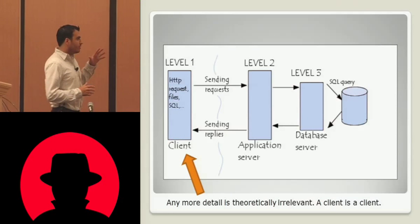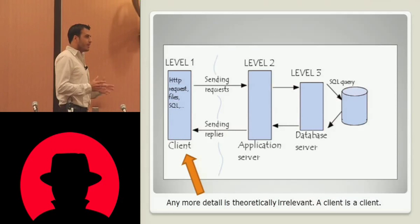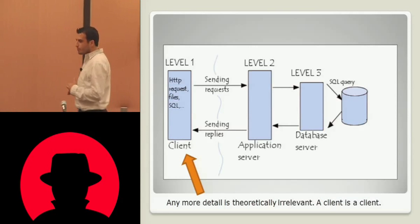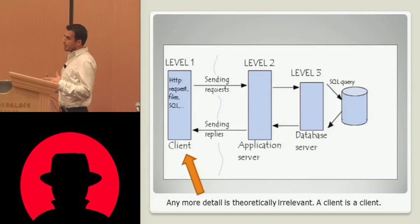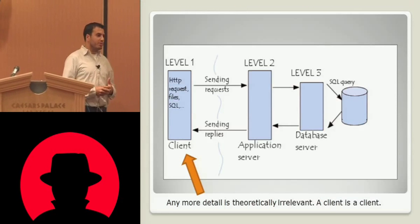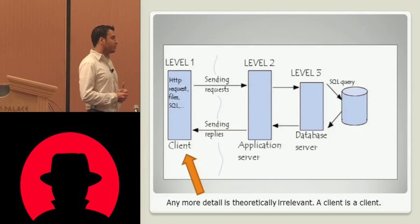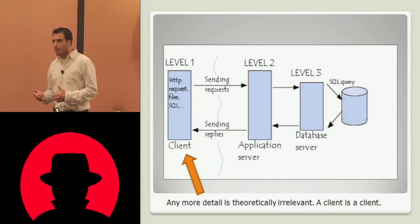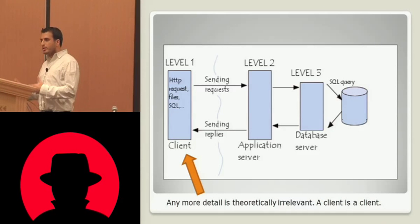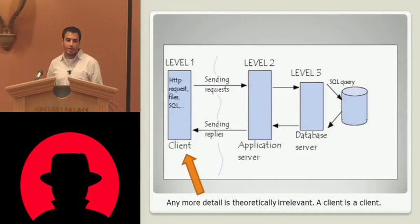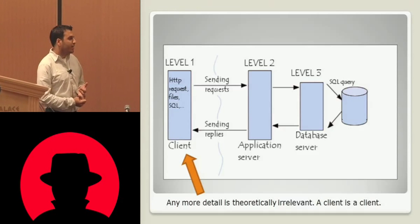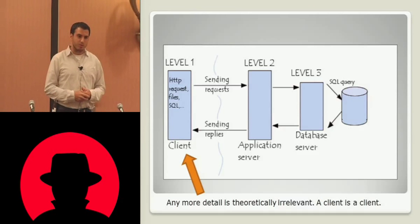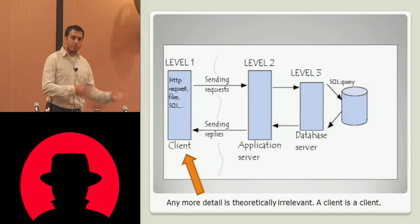Here's a dumbed-down version of any architecture diagram of any application you've seen. A typical three-tiered thing. The client is labeled client, and theoretically any more information about the client is irrelevant because you know that the client controls their own machine, therefore they can have their client do anything. But actually in practice that's a lot more difficult, especially if you're a consultant doing time-boxed engagements.